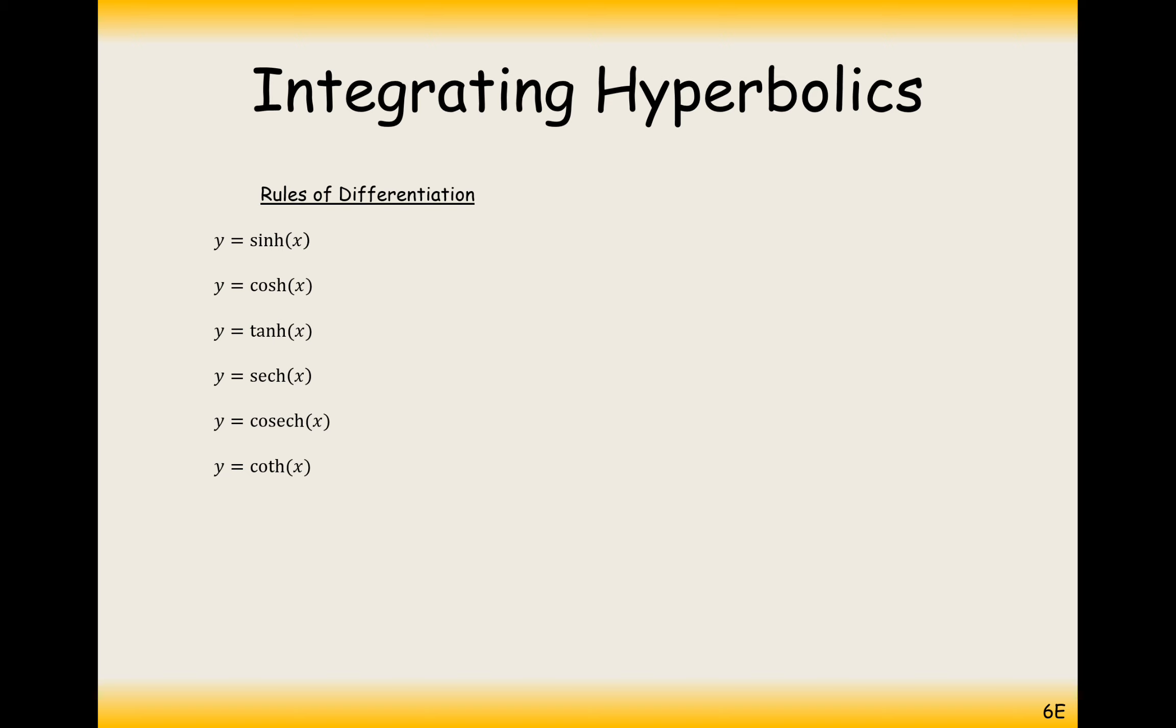Some rules of differentiation from the last video: sinh differentiates to cosh, cosh differentiates to sinh, tanh differentiates to sech squared, sech differentiates to minus tanh sech, cosech differentiates to minus coth cosech, and coth differentiates to minus cosech squared.